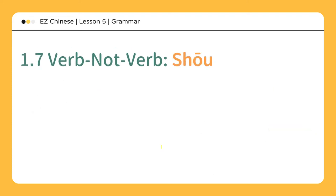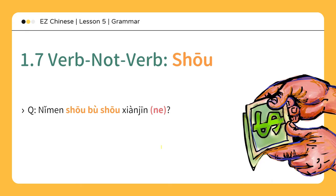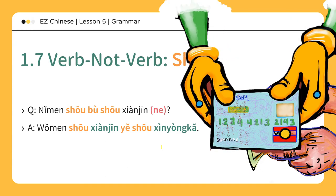收不收。 你们收不收现金？ Do you accept cash? 我们收现金，也收信用卡。 We accept cash and credit cards too. 你们收不收现金呢？ The modal particle 呢 makes the sentence more polite. 我们收现金，也收信用卡哦。 Here the modal particle 哦 is used to create a more friendly tone.